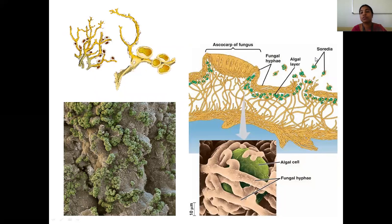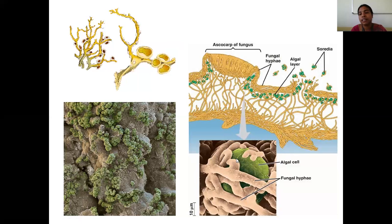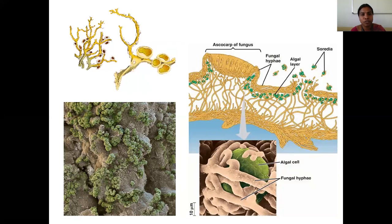The second mode is by formation of soredia. Soredia are algal cells entrapped by fungal hyphae — this packing produces a spore-like structure called a soredium. The green portion is from the photobiont. Soredia are disseminated by air, and wherever they fall on a suitable substrate they produce a new lichen thallus. This is the second vegetative mode of reproduction.